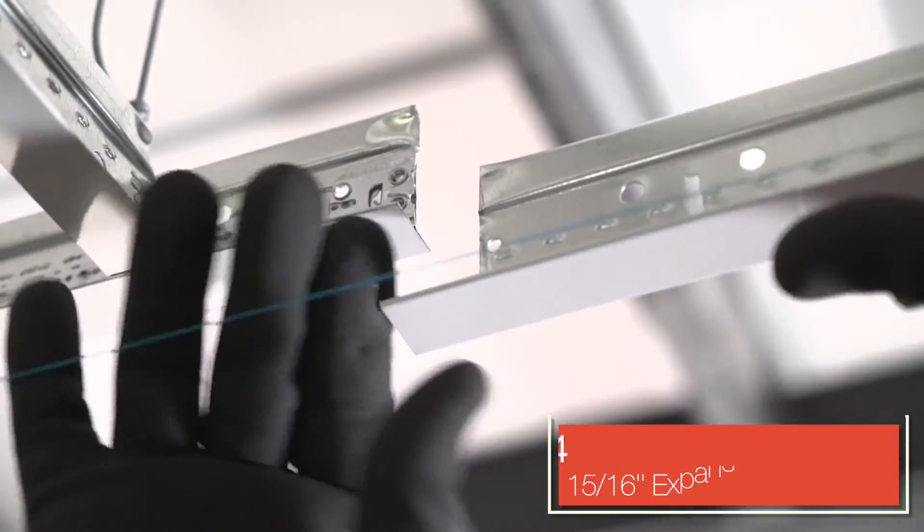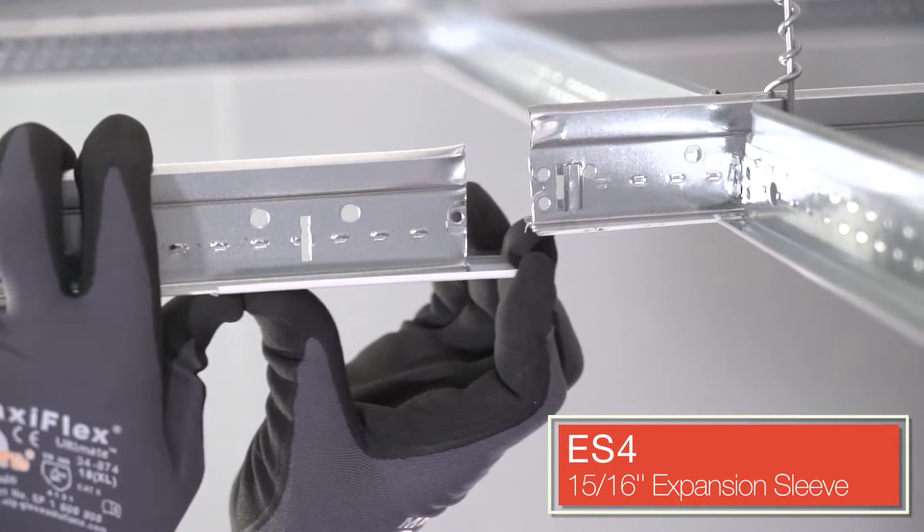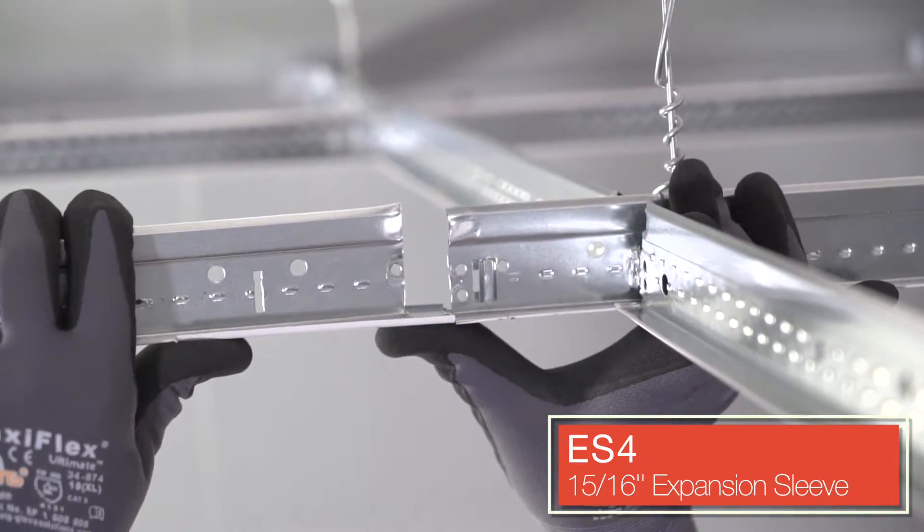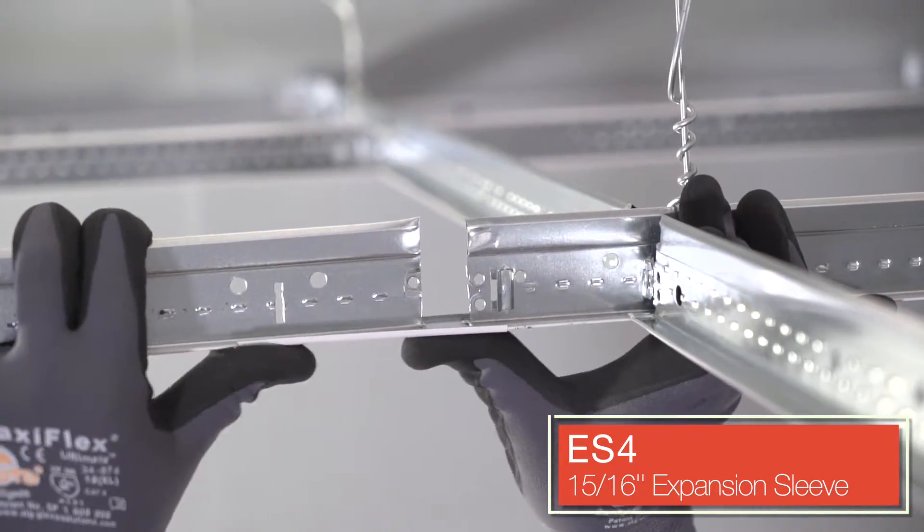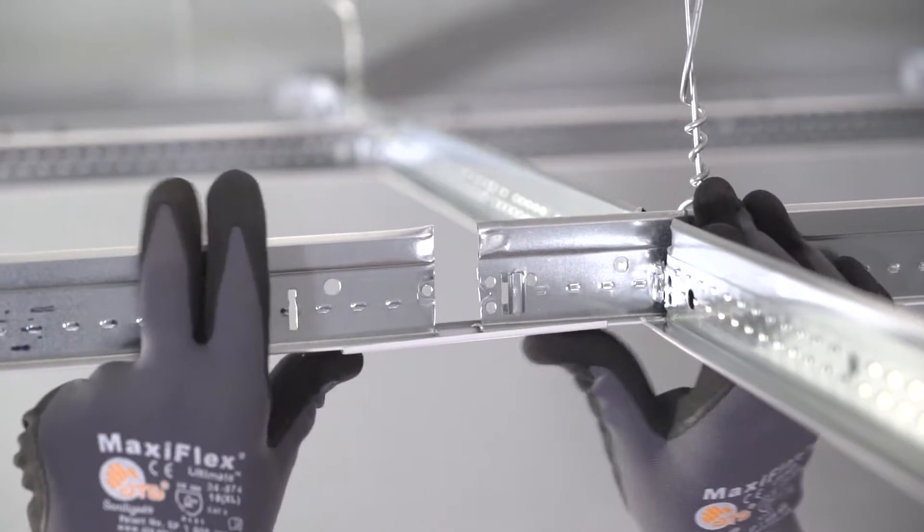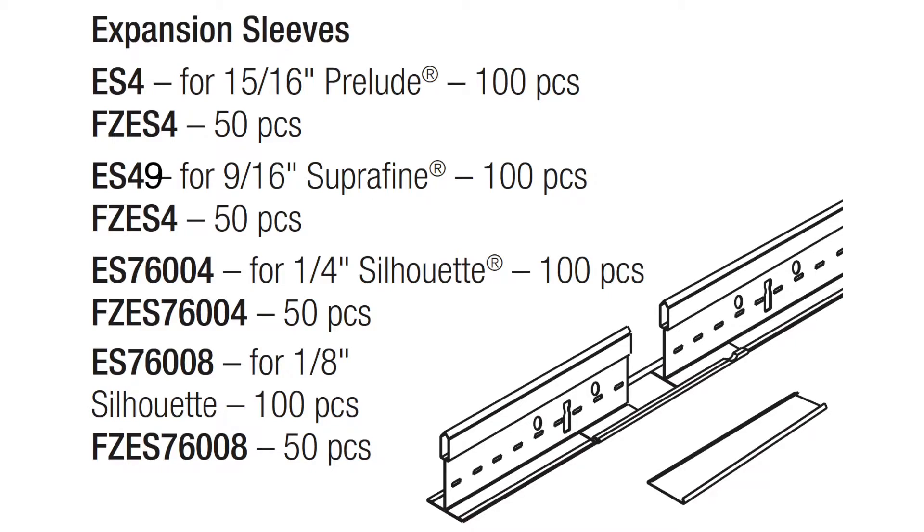Seismic RX provides the ES4 15/16th inch expansion sleeve, which gives a nice uninterrupted 15/16th inch visual at your 3-quarter inch separation joint. We make sleeves for whatever grid you're installing. Here are the items and numbers.